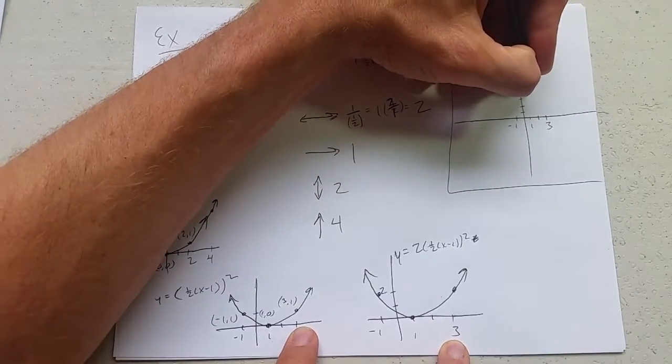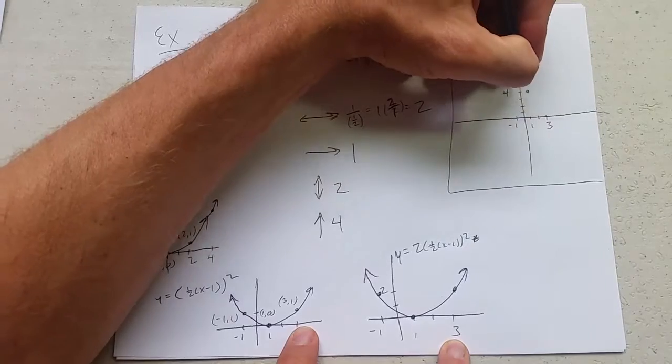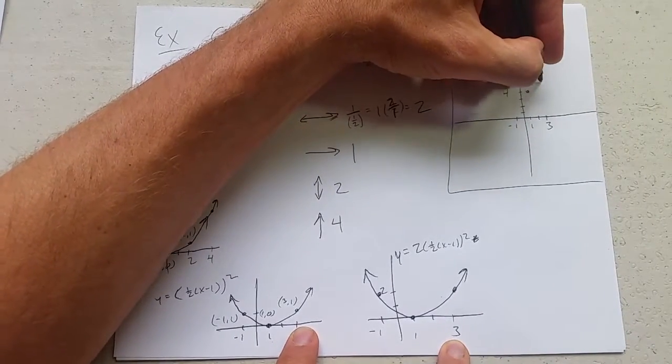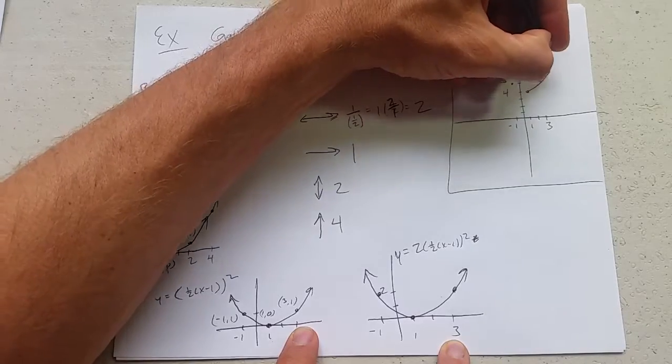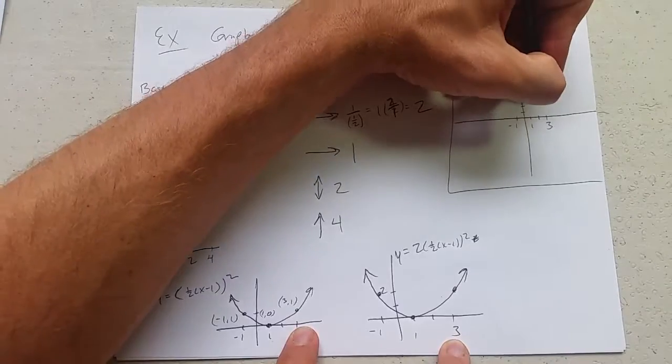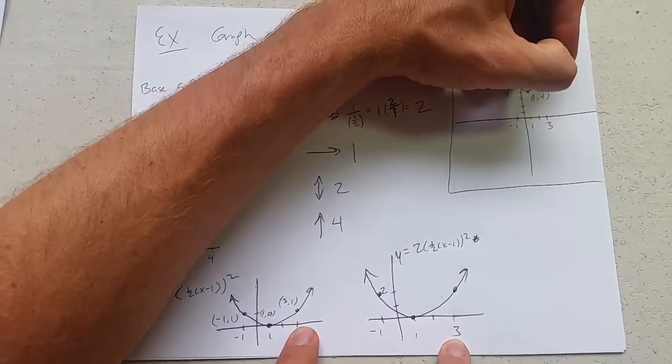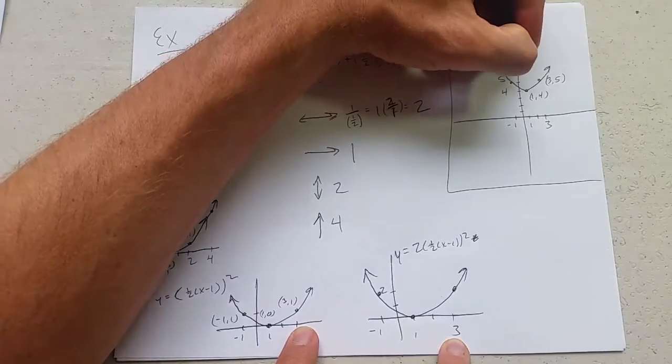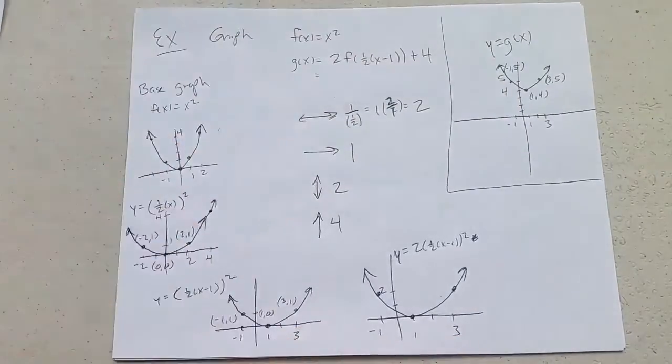One and three. Here's our final graph. We have (1, 4), (3, 5), and (-1, 5) are our three points.